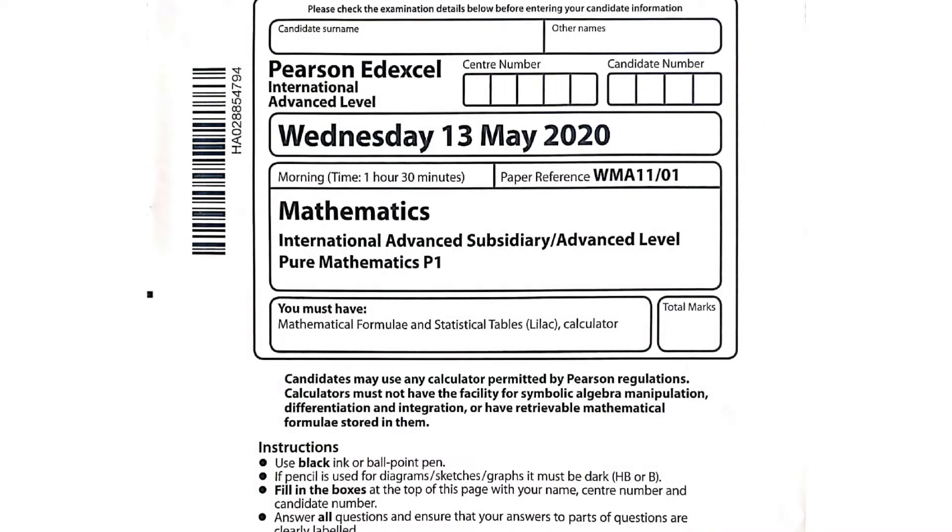Today we will be looking at another PSN Excel question paper. This is from May 2020. The paper code is WMA11/01.